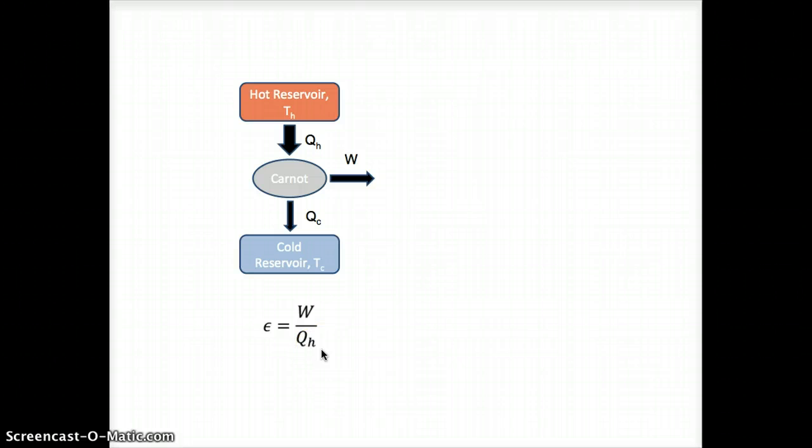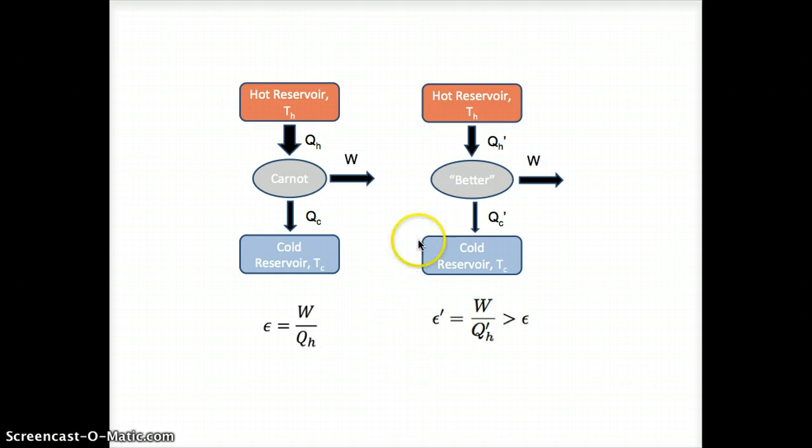We know those are possible in principle. Let's imagine something more efficient. Here's our imagined better heat engine. And what makes it better is to get the same amount of work out of our better engine requires a smaller amount of heat coming in. So W is the same as W. QH prime is smaller than QH, which means that QC prime is smaller than QC.